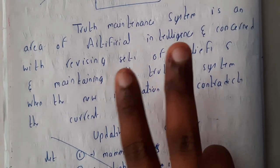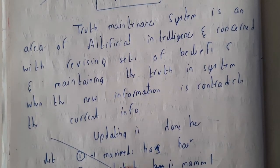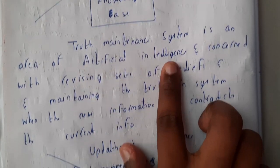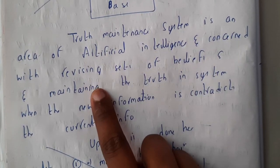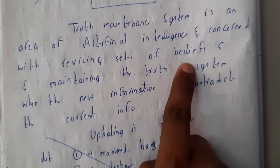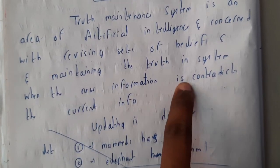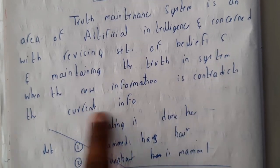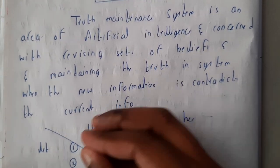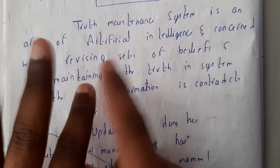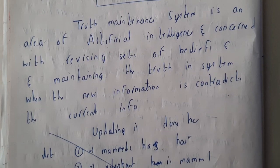So this is of two types. The truth management system is an area of artificial intelligence concerned with revising the set of beliefs and maintaining the truth in the system when new information contradicts the current information. So whenever new information comes and it says that the previous information is wrong, justifying which of both is perfect will be judged by this truth management system.